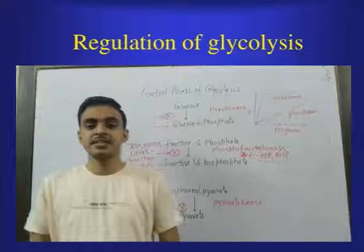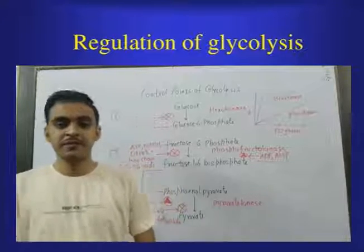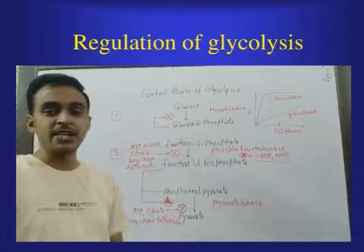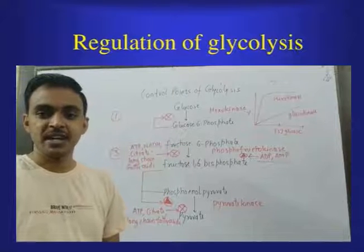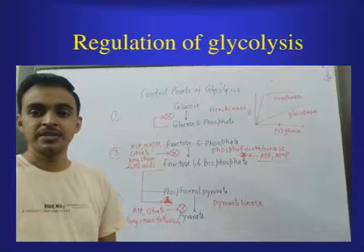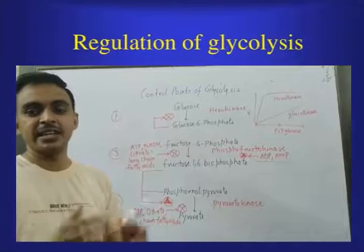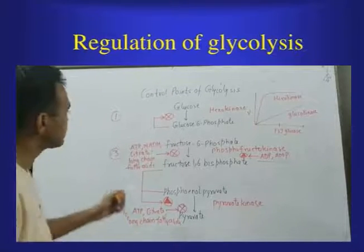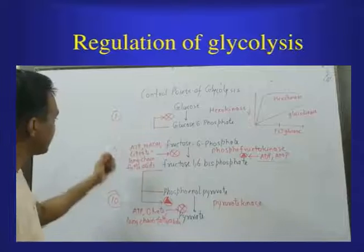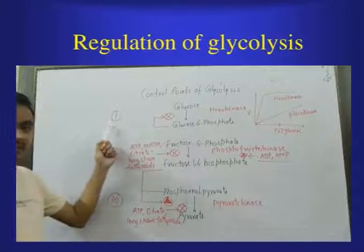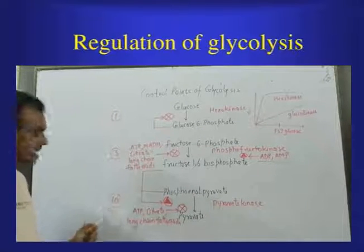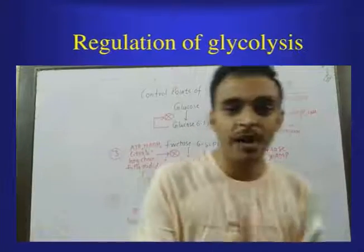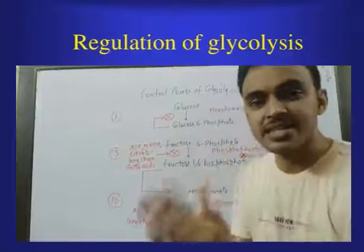Hello students. Today we will see the control points of glycolysis — how cells regulate the steps of glycolysis. Step number 1, step number 3, and step number 10 are the main control points of glycolysis.